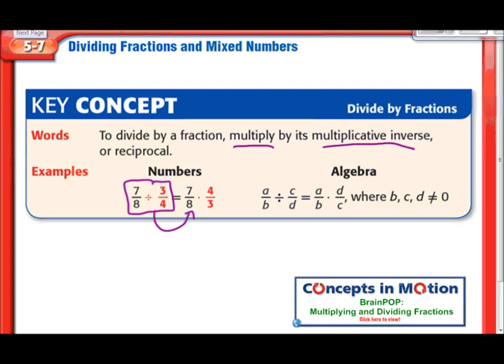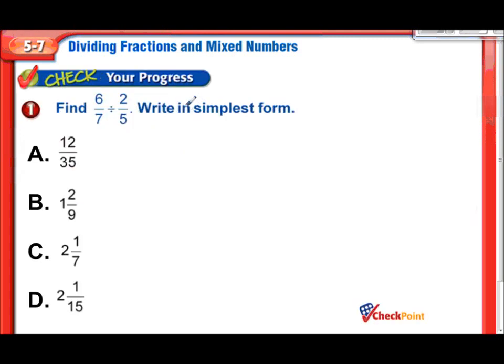Alright, let's continue. Our first problem is 6-7ths divided by 2-5ths. We're going to keep that first fraction the same. The division sign becomes multiplying, and the 2-5ths becomes 5-2nds. A lot of people call this keep, change, flip.